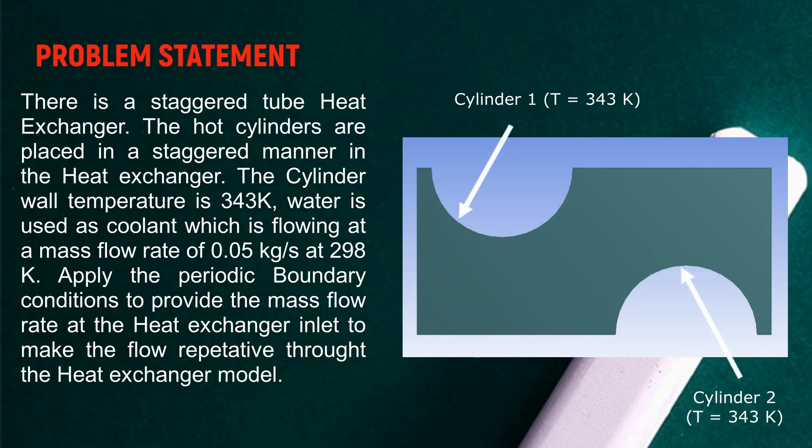To show this, we have taken a case of a staggered heat exchanger. There are two symmetric halves of hot cylinders at a temperature of 343K. Water is used as a coolant to cool these hot cylinders. Water is flowing at a mass flow rate of 0.05 kg per second and it is at a temperature of 298K.